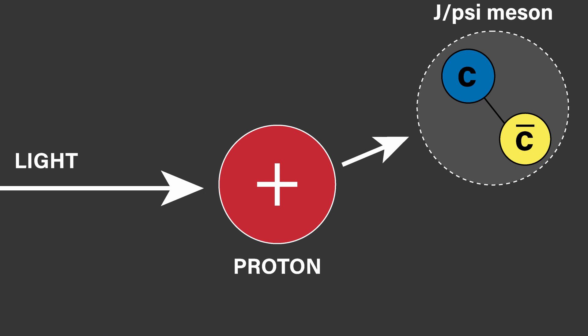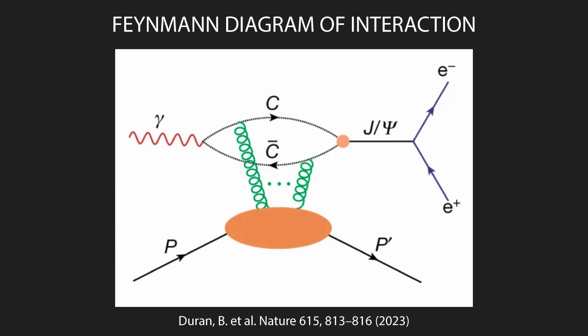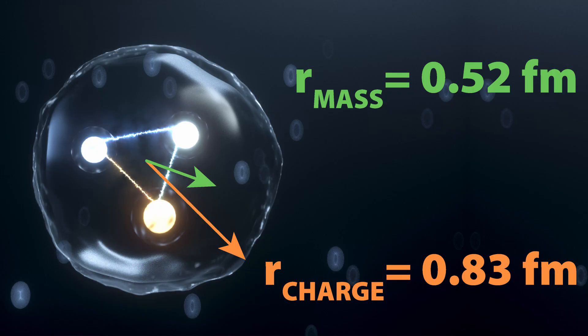So, how did they measure the mass radius and not the electrical charge radius? In the same way we try to solve most problems — by smashing stuff together. In this case, the scientists took highly energetic light and shot it at liquid hydrogen. When the light collides with the protons, another particle would be made, called a J-psi meson, which is a bound charm quark and an anti-charm pair. These mesons can then interact with the quarks inside other protons within the liquid, while not interacting with the electrical charge. By measuring the J-psi mesons that made it out of the hydrogen liquid, the scientists could get the mass radius of the proton itself, which they found to be around 0.52 femtometers, compared to the electrical charge radius of 0.83 femtometers.